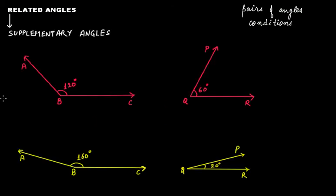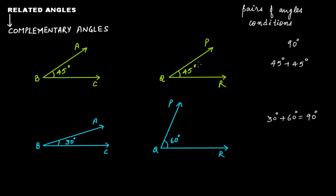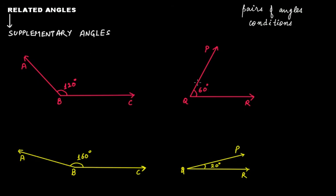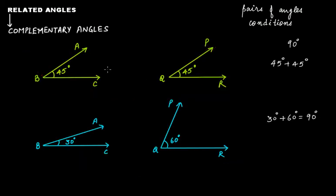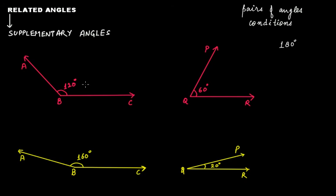The next type of related angles is supplementary angles. In complementary angles the sum is 90 degrees; in supplementary angles the sum of the angles should be 180 degrees. If a pair of angles sums to 180 degrees, those two angles are supplementary to each other — just as we said complement to each other, here we say supplement to each other.